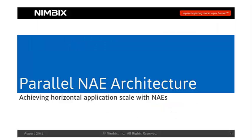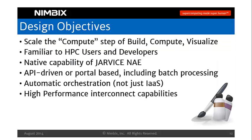Now that we've refreshed our basic cloud infrastructure, let's talk about how we achieve horizontal application scale using NAEs — we call these parallel NAEs. We have some objectives to deliver these. First, we wanted to scale primarily the compute step of build-compute-visualize, because the major use cases would be computation, solvers, or batch processing at scale. There are other ways to consume this, but this is the primary use case.